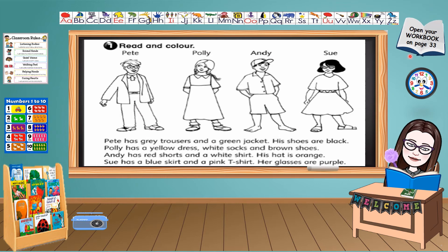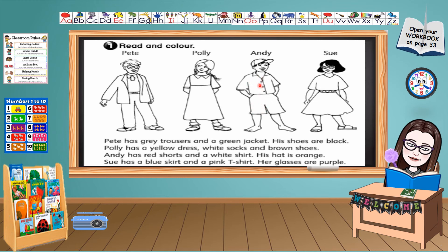Now children, open your workbook on page 33 — read and color. I will read for you and you will color all these characters. Start from Pete: Pete has gray trousers and a green jacket. His shoes are black. Holly has a yellow dress, white socks, and brown shoes. He has red shorts and a white shirt; his hat is orange. So has a blue skirt and a pink t-shirt; her glasses are purple.